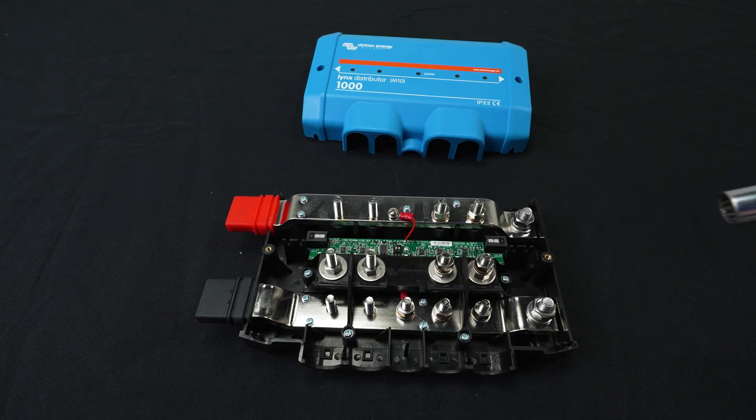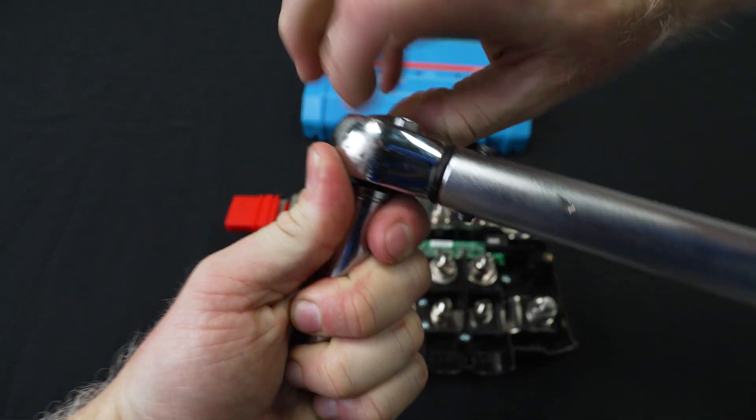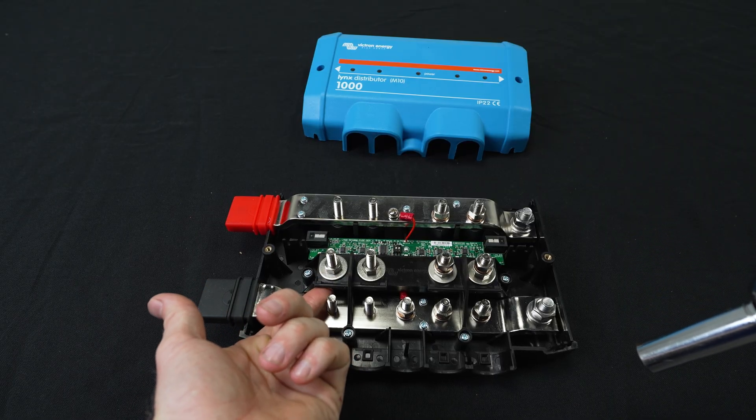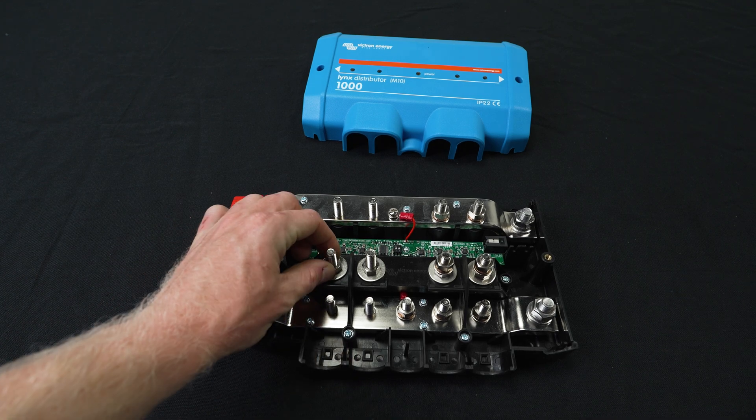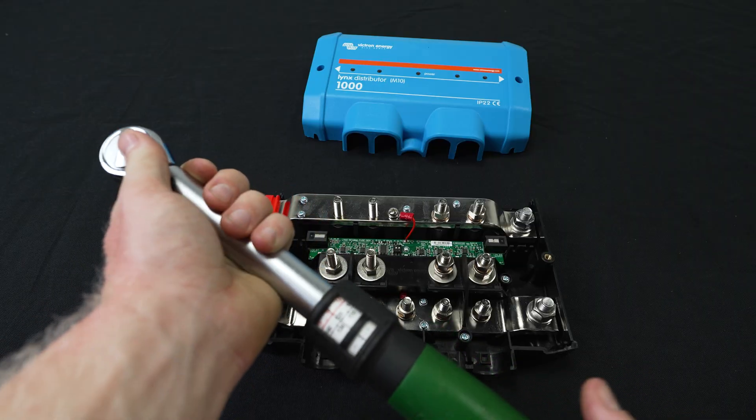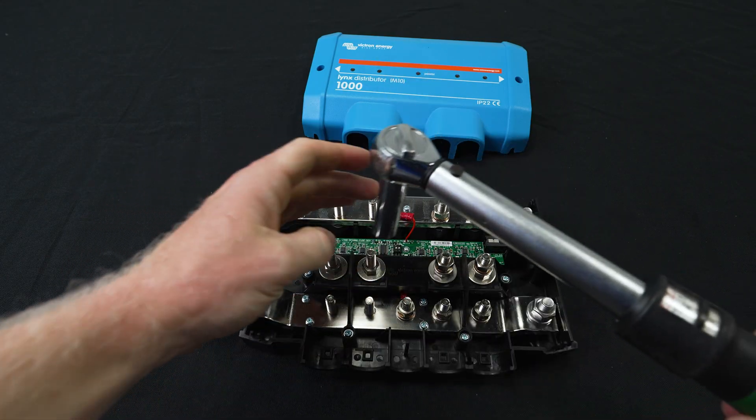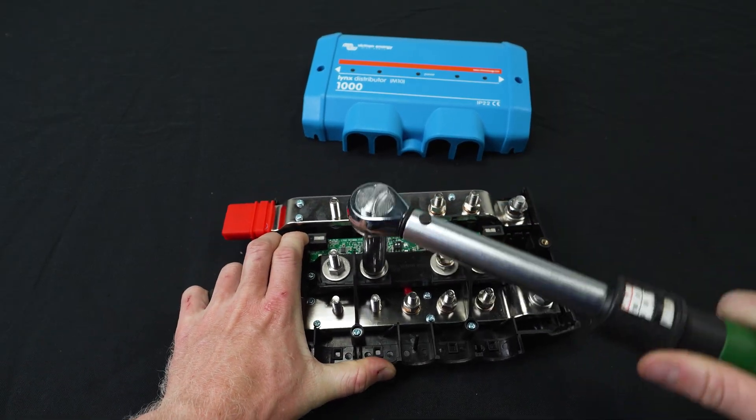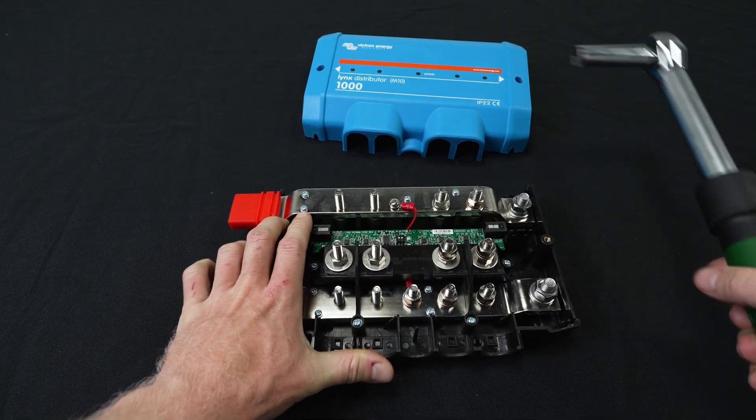So now the first step in preparing the Lynx distributor is to tighten the plastic nuts. There's a bolt under here we want to make sure that the head of the bolt is snug in the plastic and doesn't come loose. So we're going to set our torque wrench to 10 newton meters and just snug this up. You really don't want to over tighten these because it's just plastic holding the bolt in.